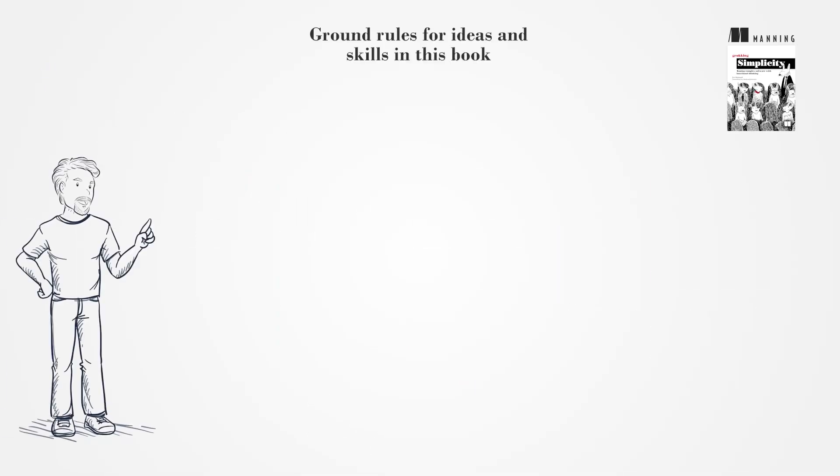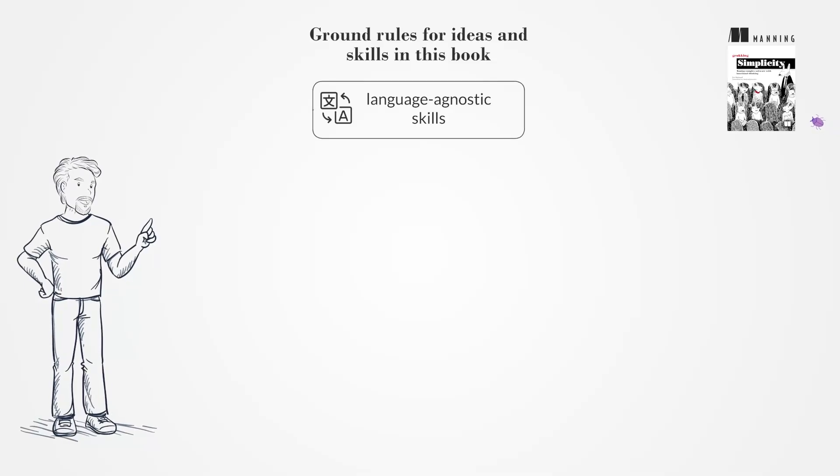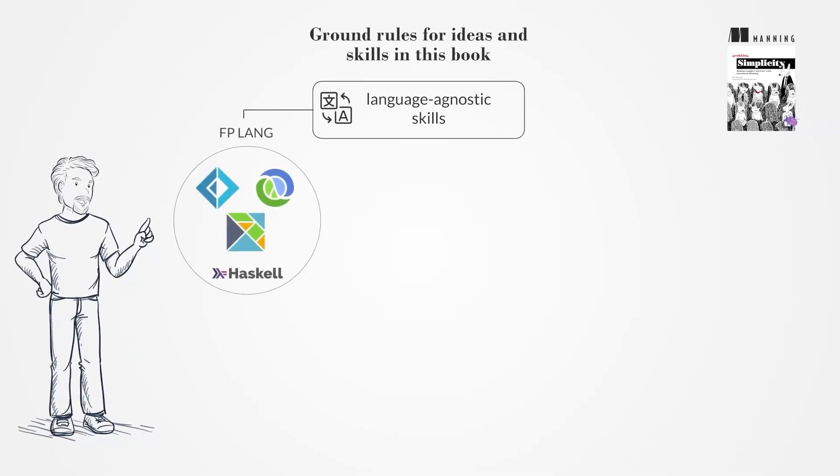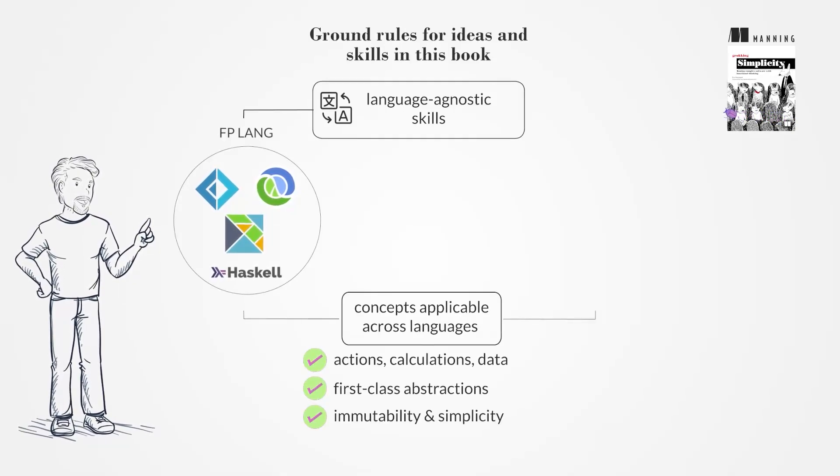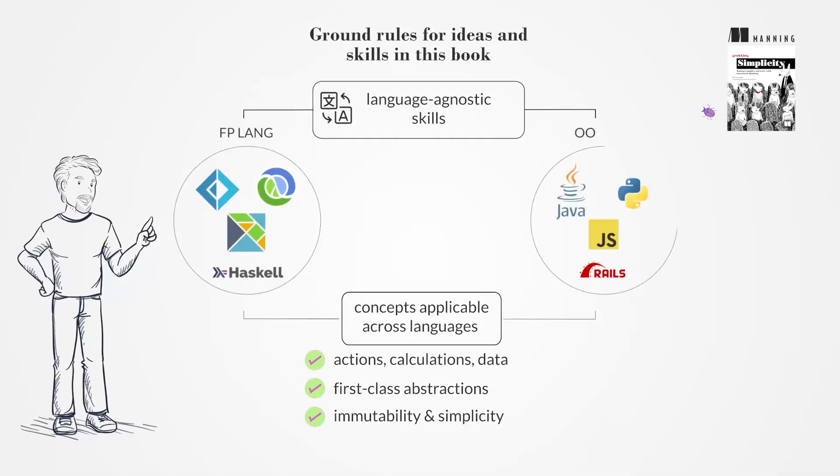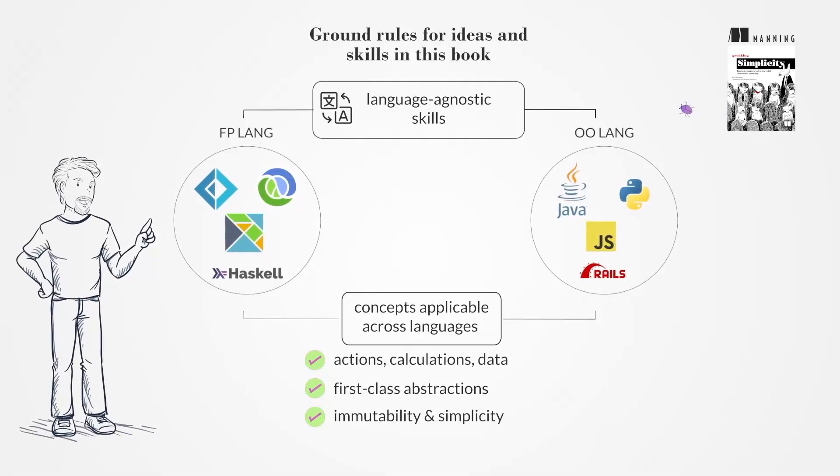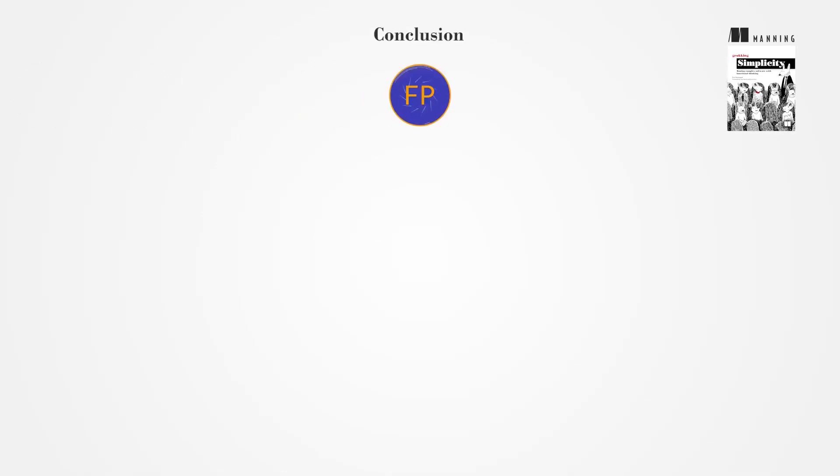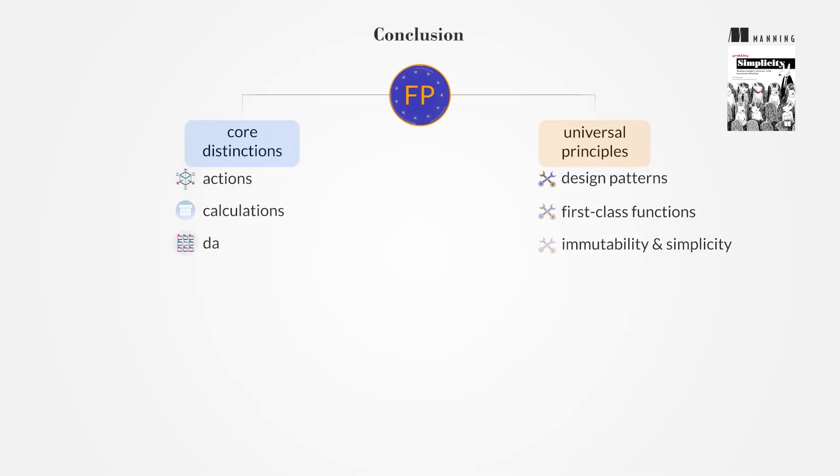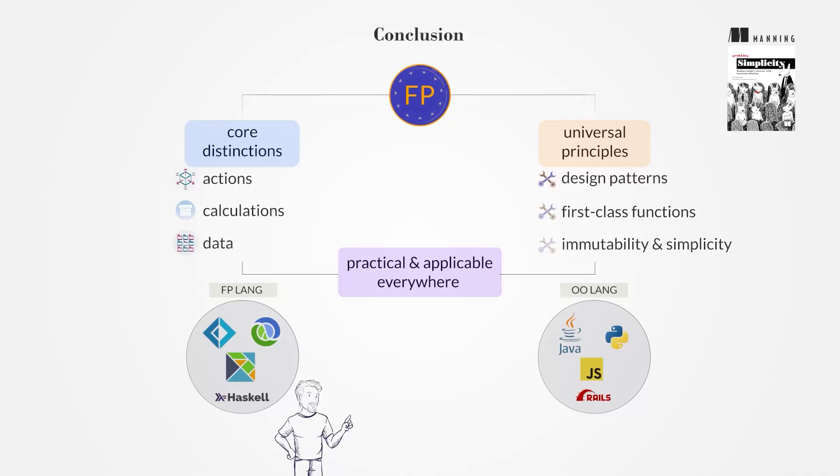The book focuses on language-agnostic skills with immediate practical benefits, applicable regardless of your current code situation. It aims to provide universally applicable principles, even for those using object-oriented languages. Functional programming is a rich field of techniques and principles, starting with the distinction between actions, calculations, and data. This book teaches the practical side of FP, applicable in any language and problem, encouraging readers to join the community of functional programmers.